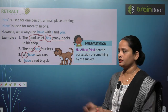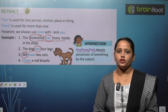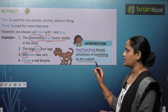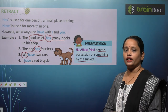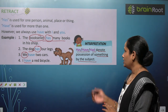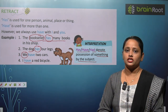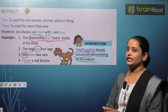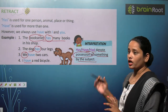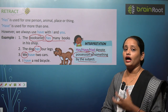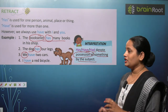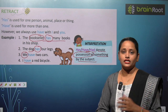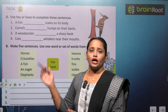Has, have and had denote possession of something by the subject. Yeh jo teeno words hain — has, have aur had — yeh teeno possession batate hain, ki koi cheez kisi ki hai. Belonging batate hain ki kaunsa samaan kiska hai. So these words are used for belongings and possession.